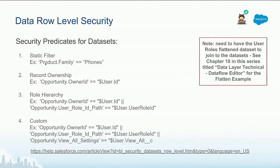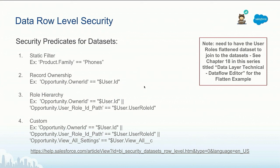Looking at the examples: first, if you apply a static filter — which is very uncommon — it is just a simple filter. So whoever queries this dataset with this static filter will only see certain results. The second common one is record ownership. For example, an Opportunity dataset has an Owner ID field. When a user logs in, we know who's logged in and we pass the user ID. Only the users who own the records can see those records.